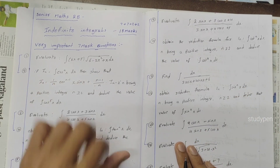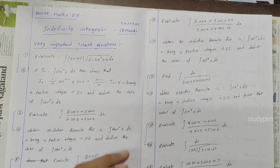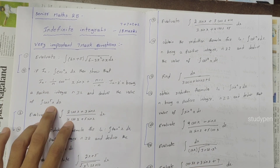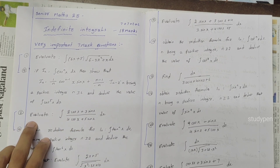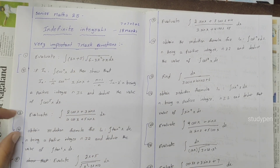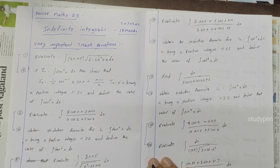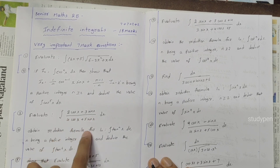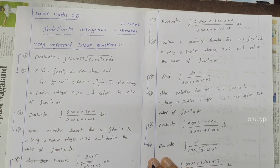First one: evaluate integral cos power of 5x dx. Next: evaluate integral (2 cos x + 3 sin x) / (4 cos x + 5 sin x) dx.